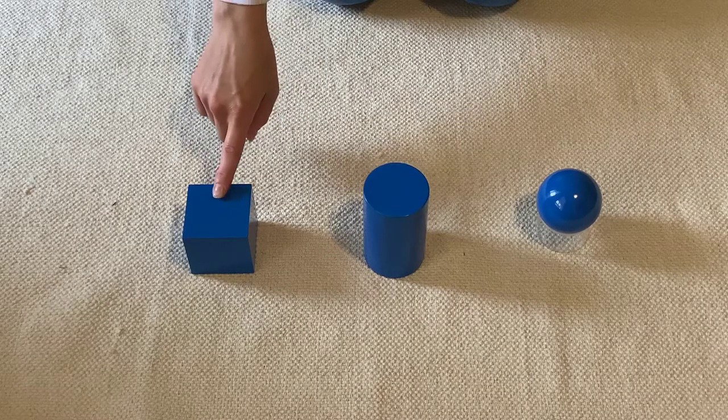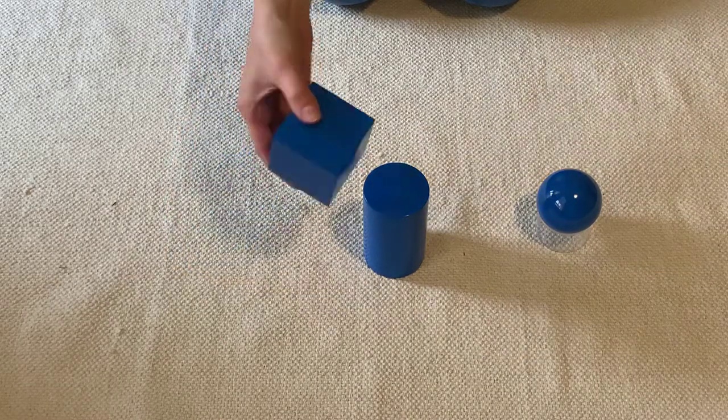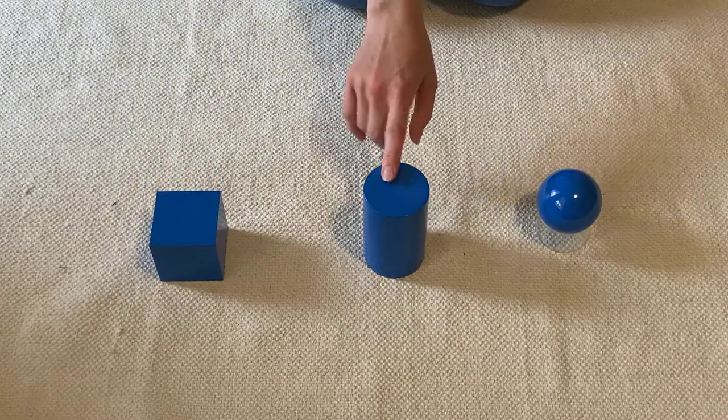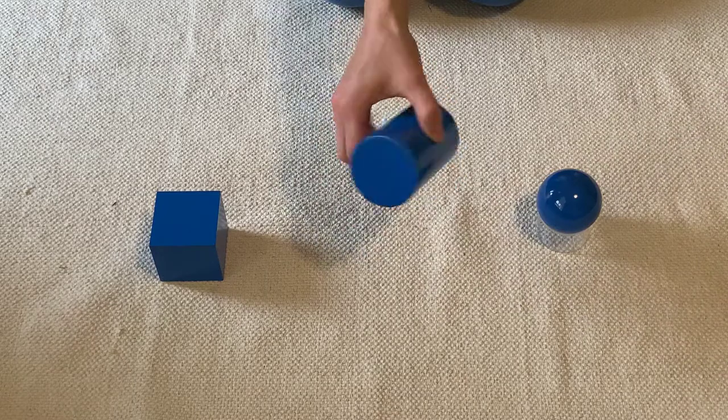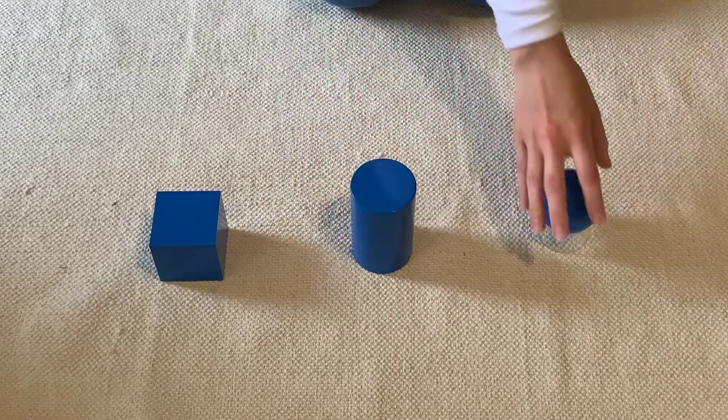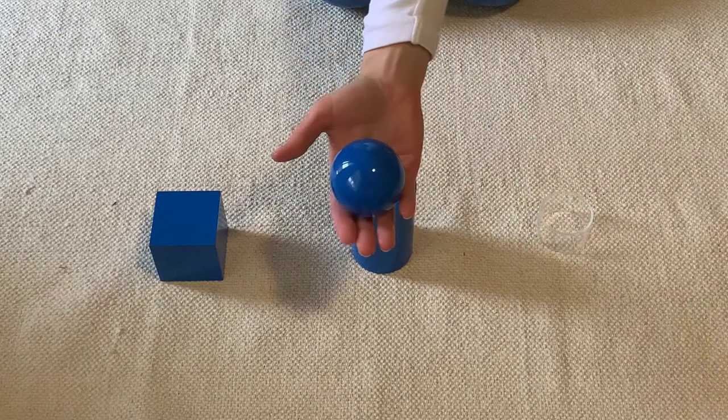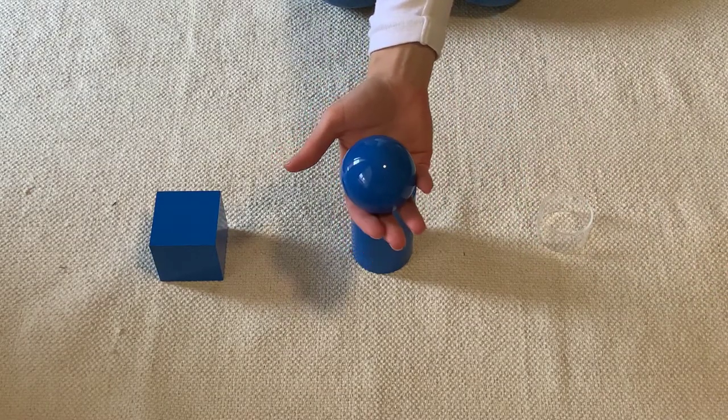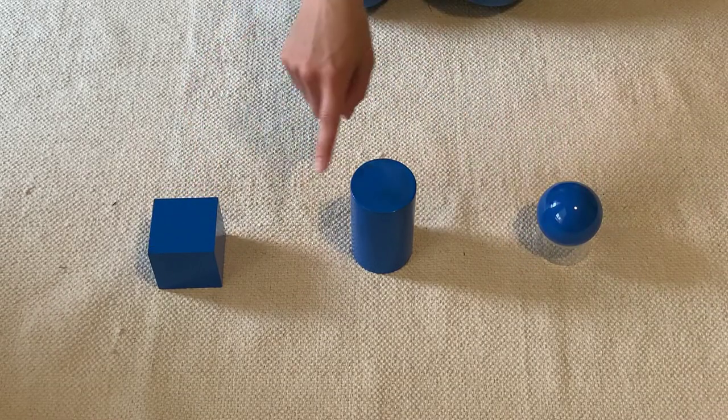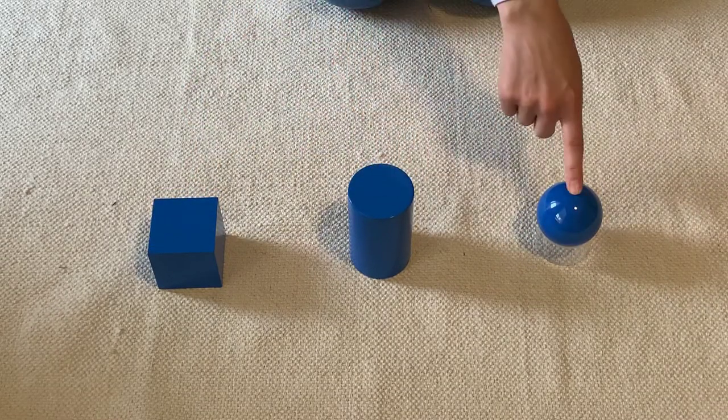So tell me, what is the name of this shape? A cube. What is the name of this shape? Cylinder. And what is the name of this shape? Sphere. Very good. Cube, cylinder, sphere.